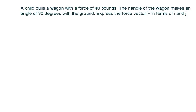A child pulls a wagon with a force of 40 pounds. That probably means the child weighs 40 pounds. The handle of the wagon makes an angle of 30 degrees with the ground. And we just need to express the force vector. So basically all it is is the force vector equals 40 pounds.